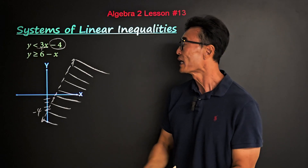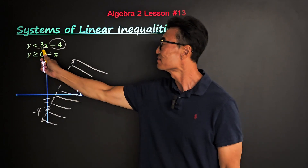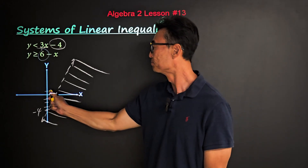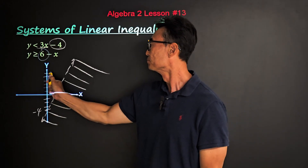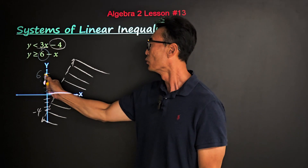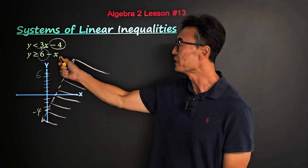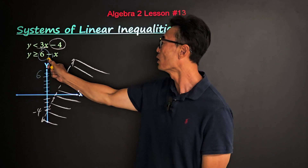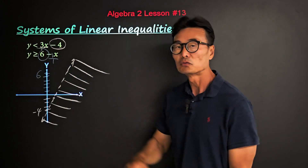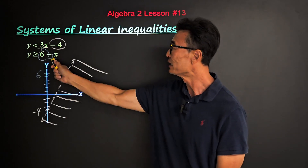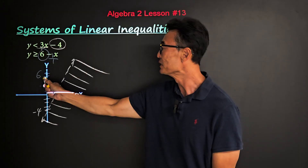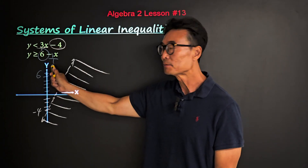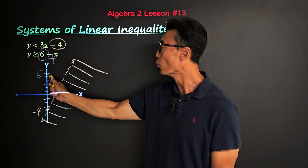Next we have six as the y-intercept, right there. The slope is negative one — I'd like to rewrite that as negative one over one, to show that it means go down one and then one to the right.